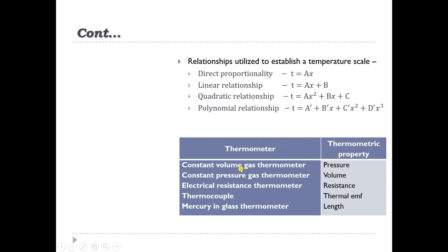The different thermometer types include: a constant volume gas thermometer, which has pressure as its thermometric property; a constant pressure gas thermometer, which has volume as its thermometric property; an electrical resistance thermometer, with resistance as its thermometric property; a thermocouple, with thermal EMF as its thermometric property; and a mercury-in-glass thermometer, where length is the thermometric property. Using these thermometric properties, temperature is determined.